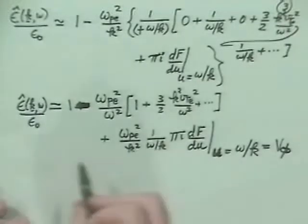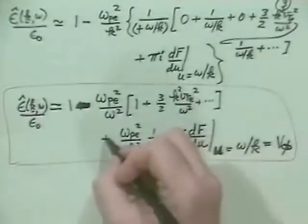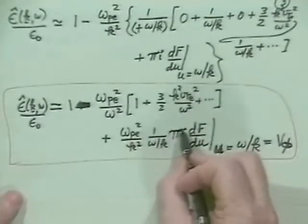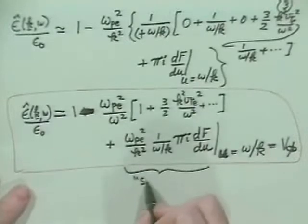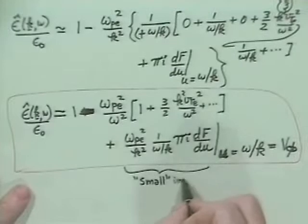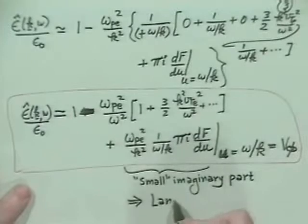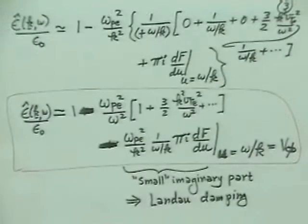This dispersion relation includes kinetic effects — the fact that particles can move at the same velocity as the phase velocity of the wave, giving a small imaginary part from the wave-particle resonance. Previously we didn't have this; it will be small, but it leads to Landau damping.